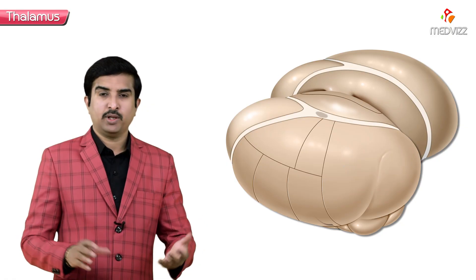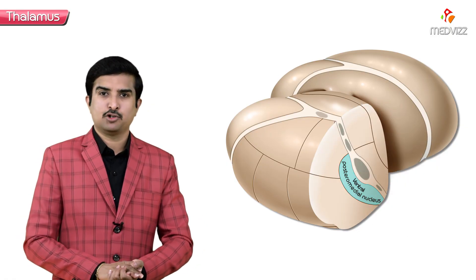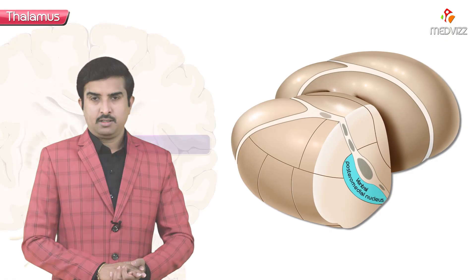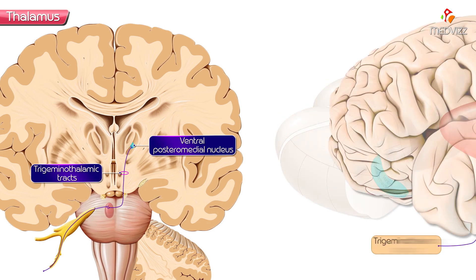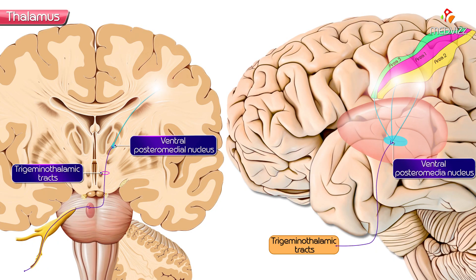Next is one of the very important ones, called the ventral posteromedial nucleus. The ventral posteromedial nucleus of the thalamus receives the trigeminothalamic tracts, and projects fibers into the somatosensory area of the cerebral cortex, known as Brodmann areas 3, 1, and 2.